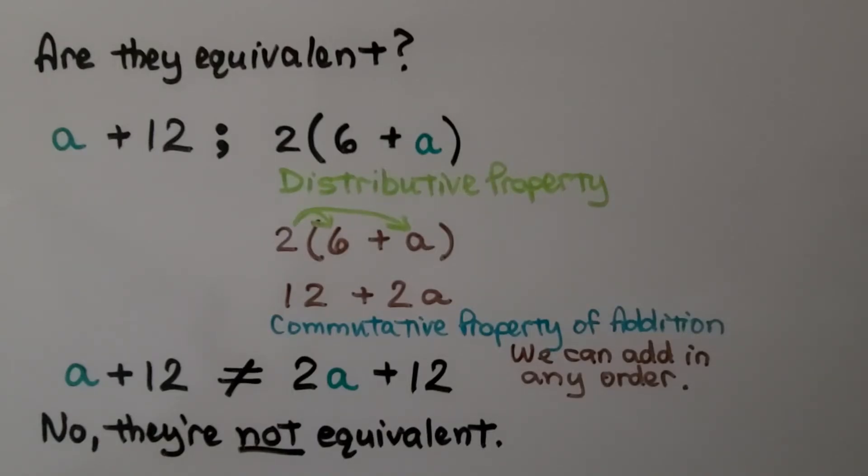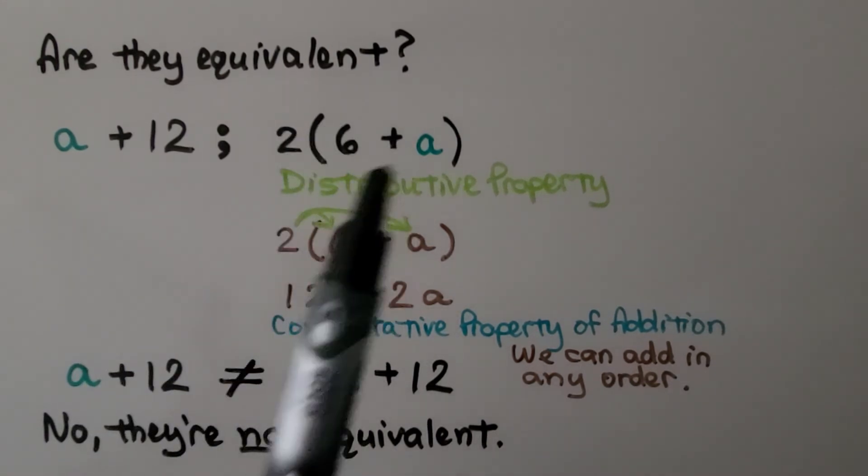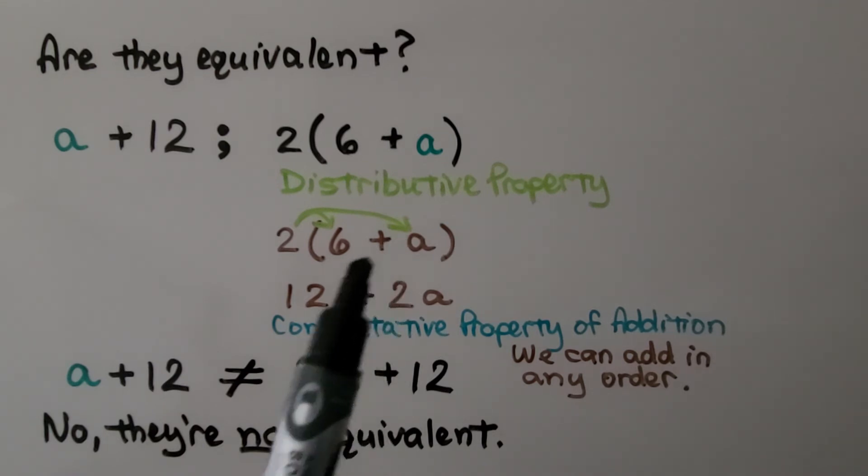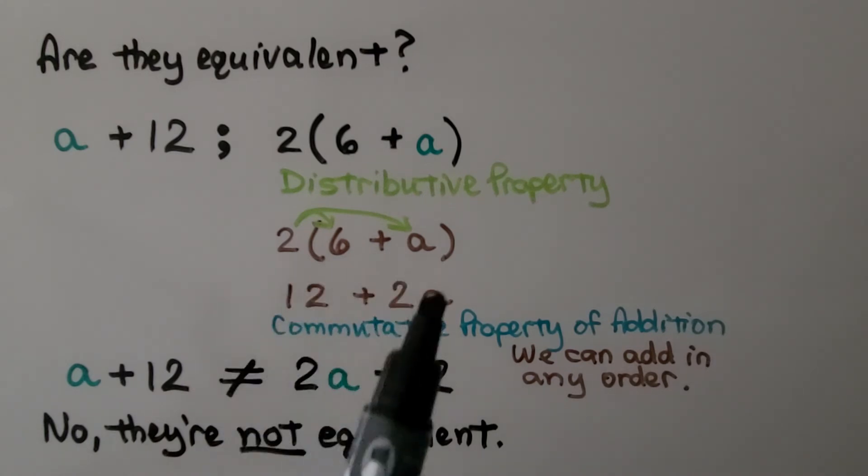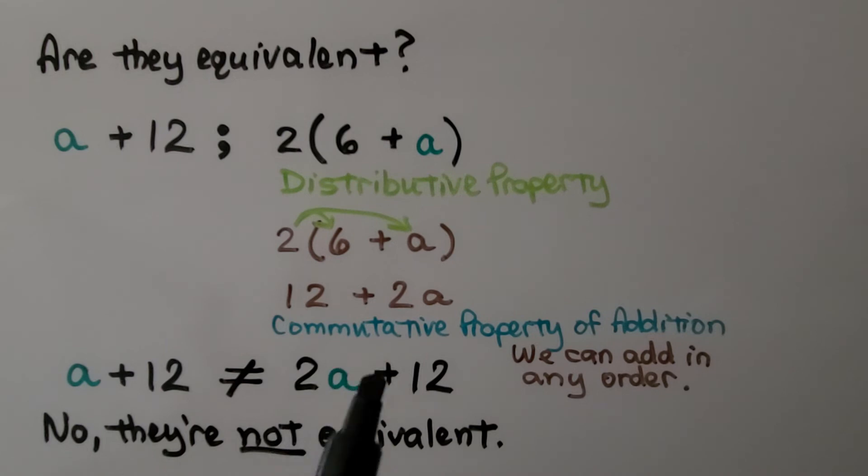Are these equivalent? We have a plus 12 and we're comparing it to 2 times (6 plus a). We can use the distributive property and do 2 times 6, which is 12, and 2 times a, which is 2a. There's a plus sign there, so we're going to put a plus sign between them. And we can flip these around so that instead of 12 plus 2a, we have 2a plus 12. So it's in the same order as this expression. Now we have a plus 12 and 2a plus 12. No, they are not equivalent.